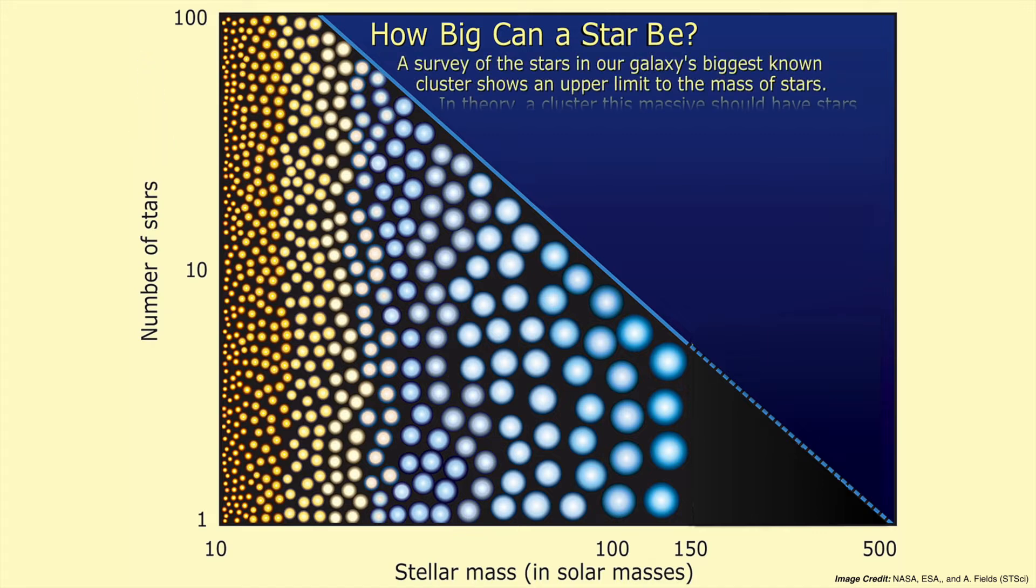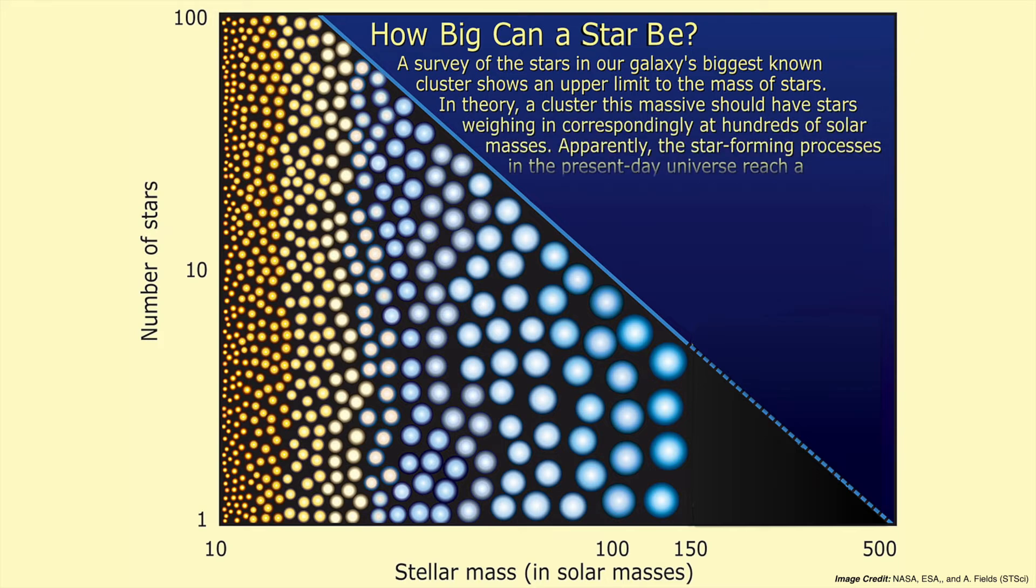A survey of those stars shows an upper limit to the mass of these stars. In theory, a cluster that's this massive should have stars weighing in correspondingly at hundreds of solar masses, but apparently the star-forming processes in the present-day universe reach a practical limiting weight for stars. Right around 150 solar masses, we reach that practical limit.